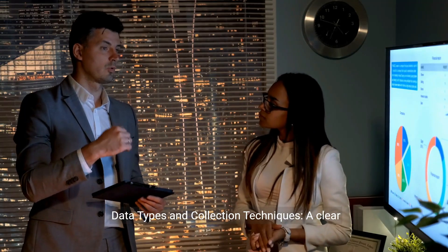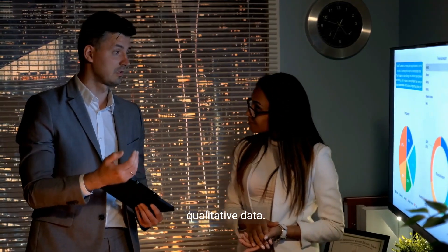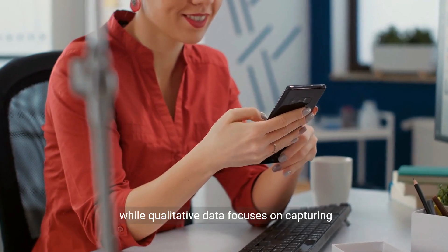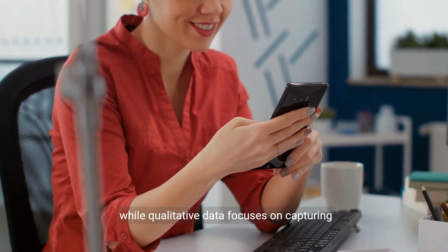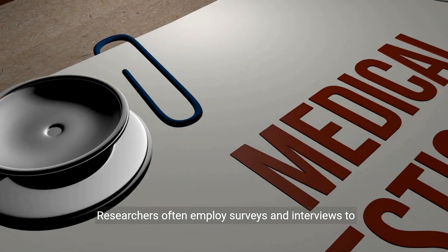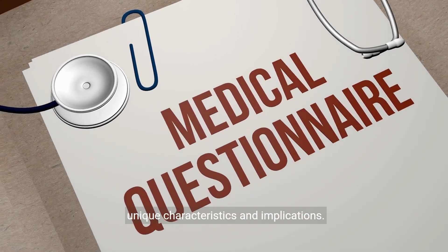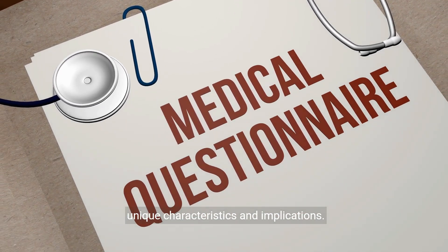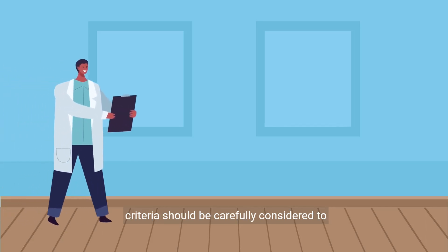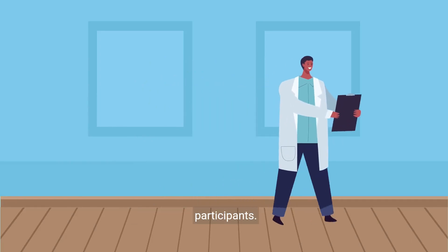Data types and collection techniques. A clear distinction exists between quantitative and qualitative data. Quantitative data involves numerical measurements, while qualitative data focuses on capturing in-depth insights and perspectives. Researchers often employ surveys and interviews to collect primary data, each method having its unique characteristics and implications. Ethical guidelines and inclusion-exclusion criteria should be carefully considered to protect the rights and well-being of research participants.